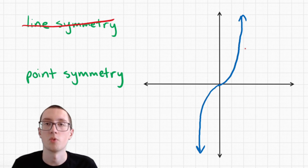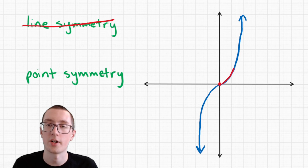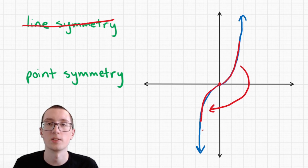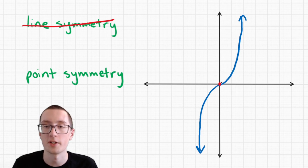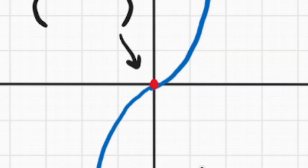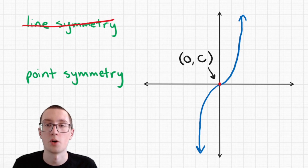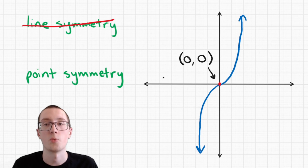But does it have point symmetry? Let's draw a point right here in the middle of the graph. If we take this part of the graph and rotate it 180 degrees, it goes right here, which is exactly on this line. So yes, this does have point symmetry. Now we need to find the coordinates of this point. It has gone zero left and right and zero up and down, so the middle of the graph is always zero, zero. This graph has point symmetry at zero, zero.